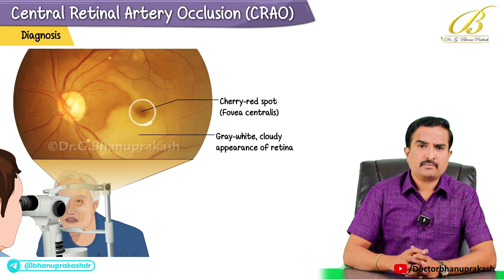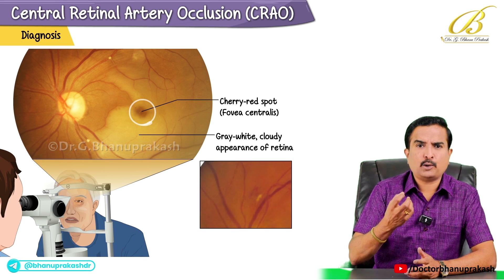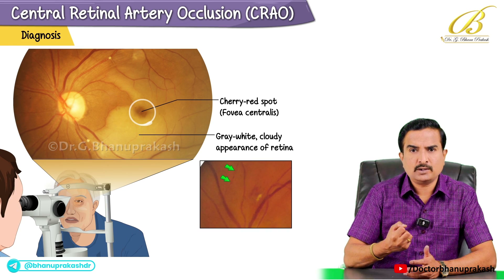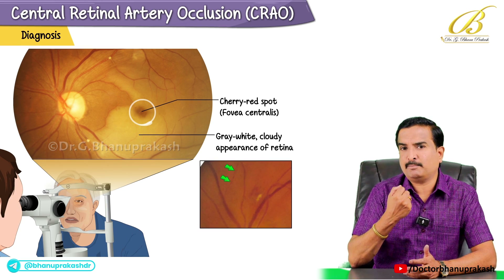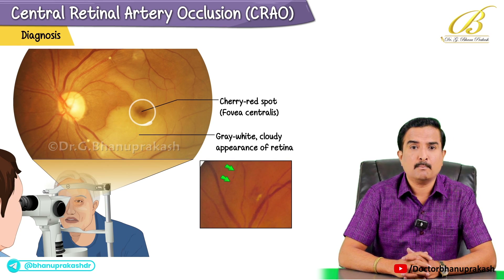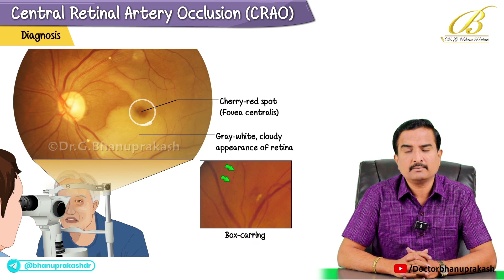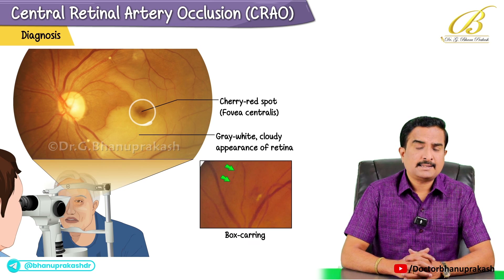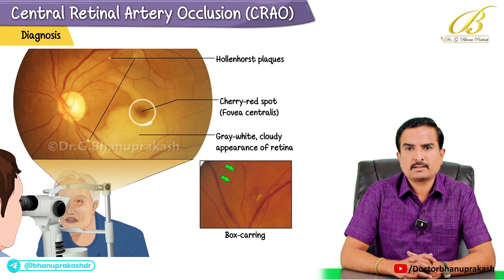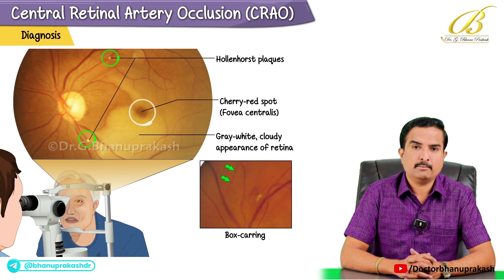There will also be narrowing of the retinal vessels and slowed segmented blood flow, often described as box scarring. In some cases, retinal emboli such as Hollenhorst plaques may be observed, indicating a thromboembolic origin.